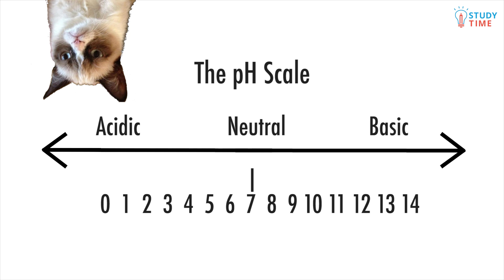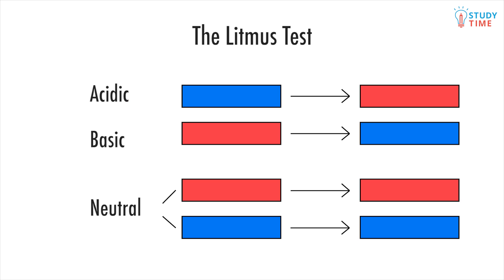We can test for pH using two methods. The first is simple — it's called the litmus test and uses red and blue paper called litmus paper to reveal whether a substance is acidic, basic, or neutral. If the blue paper turns red, it's an acid. If red turns blue, it's basic. If both colours stay the same, it's neutral. You need to test with both colours to make sure the substance is or isn't neutral.